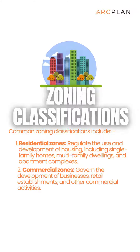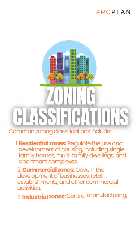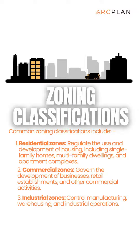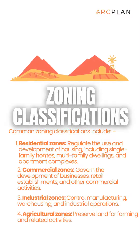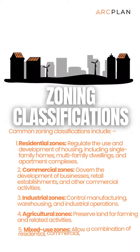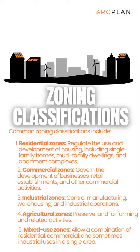Industrial zones control manufacturing, warehousing, and industrial operations. Agricultural zones preserve land for farming and related activities. Mixed-use zones allow a combination of residential, commercial, and sometimes industrial uses in a single area.